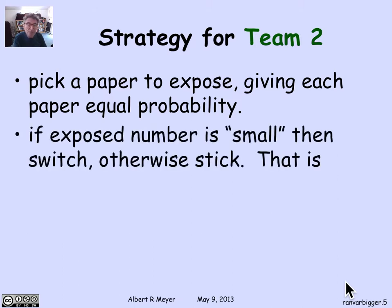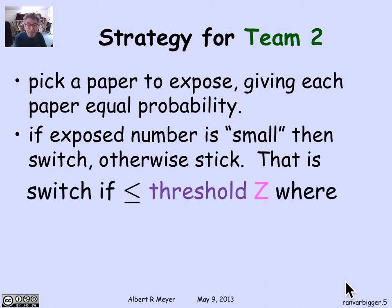The next step is that team 2 decides whether the exposed number is small — and if so, they switch; otherwise, they stick. They define some threshold z, where being less than or equal to z means small, and being greater than z means large. The question is: how do they choose z?